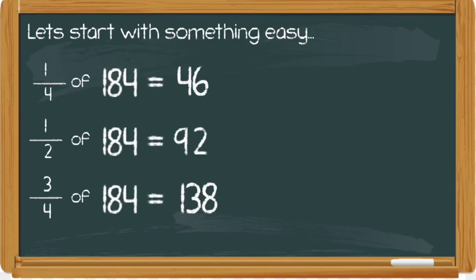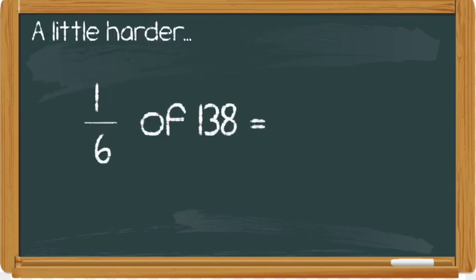In order to find a fraction of an amount, you divide your number by the denominator. Now as I've been saying all along, in order to find a fraction of an amount, you divide your number by the denominator. I'm going to divide 138 by 6.